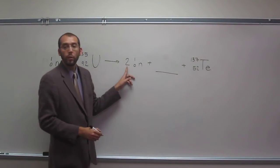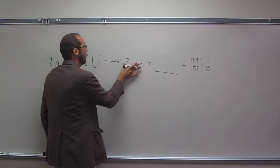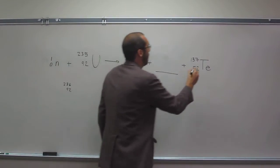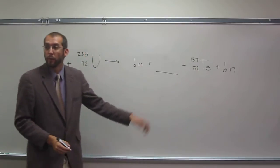So this 2 here, that refers to 2 neutrons. So if it helps you out to erase that and maybe put another neutron over here, that's totally fine to do.